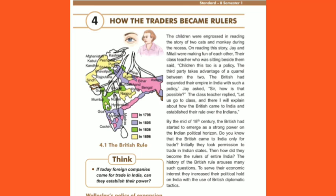Chapter 4 is all about the Britishers' arrival. Basically, they came from England for trade purposes only — not to rule in the initial stages.